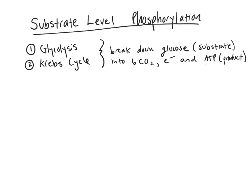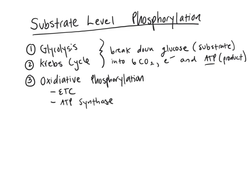Glycolysis and Krebs also make some ATP. The electrons released from glycolysis and Krebs go to the third step, called oxidative phosphorylation, which has the electron transport chain and ATP synthase. All electrons produced in substrate level phosphorylation are carried to the ETC by NADH, the electron carrier. NADH drops those electrons off into the electron transport chain and becomes NAD+, which then goes back to grab more electrons and continue the cycle.